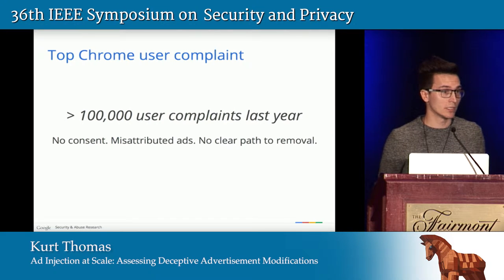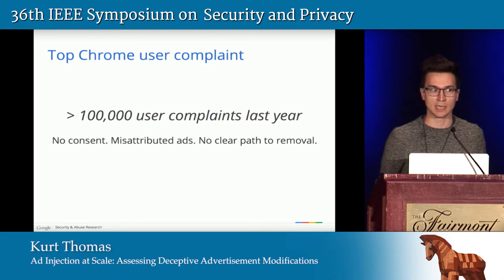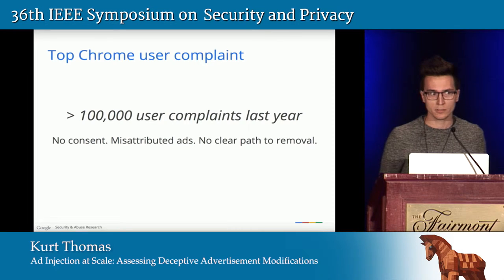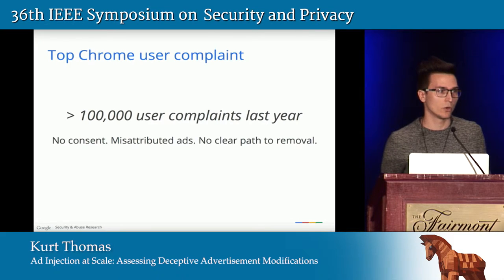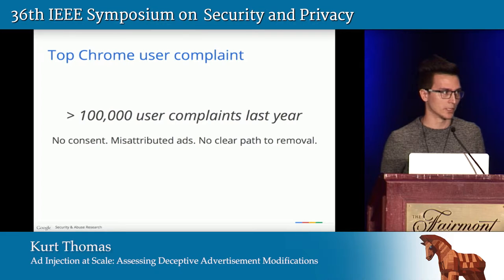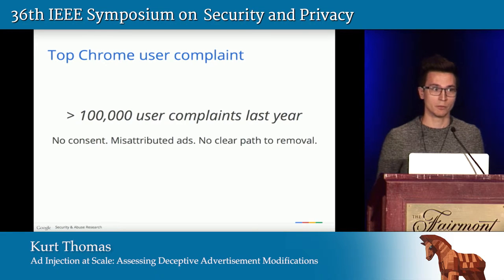This leads to a poor user experience in Chrome, and we've received over 100,000 complaints from users over the last year about this ad injection ecosystem — the top Chrome complaint we receive of basically all time. There's a consistent theme: first, there's no consent as to how the software is installed. Second, users misattribute ads to the page owner — seeing ads on Wikipedia and blaming Wikipedia rather than the software they have installed. And third, there's no clear path to removal.